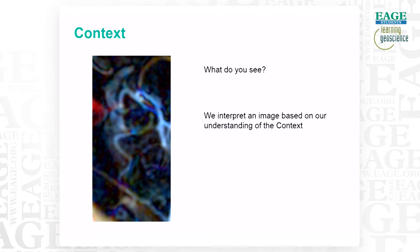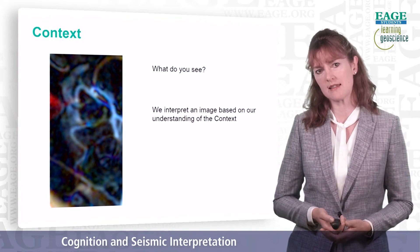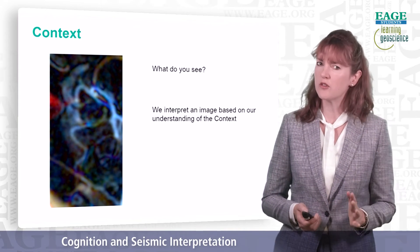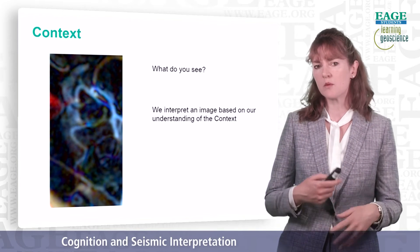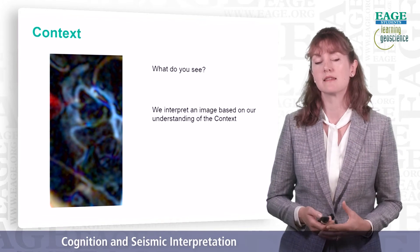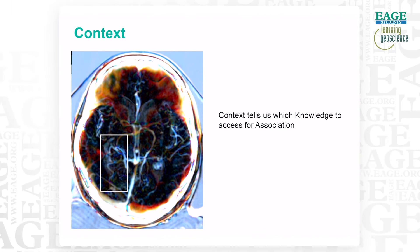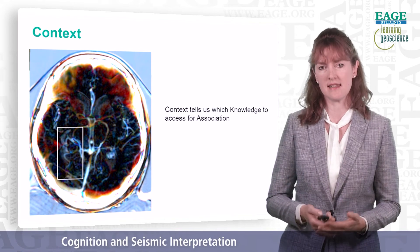Context is very important because it tells us which bits of knowledge to use to understand an image. Within the context of a geosciences presentation, we might look at an image and see sinusoidal features — possibly a channel system — and a more diffuse area at the top, possibly a levee system. But if I expand that image, you'll see that context was completely wrong. What we're actually seeing is an image of part of somebody's brain — the arteries and veins in the cerebral cortex. So knowing the context, knowing the bigger picture, tells us which knowledge to access for the association to help us understand the information in the data.